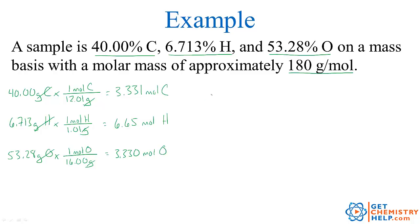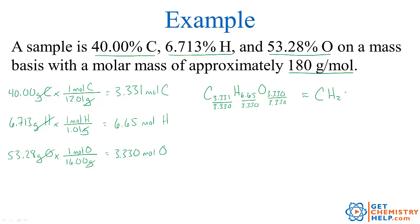The next step is to write a pseudo-formula: C 3.331, H 6.65, O 3.330. These don't look like whole numbers, so we divide through by the smallest, which is 3.330. That basically comes out to CH2O — a 1 to 2 to 1 ratio. This is our empirical formula.